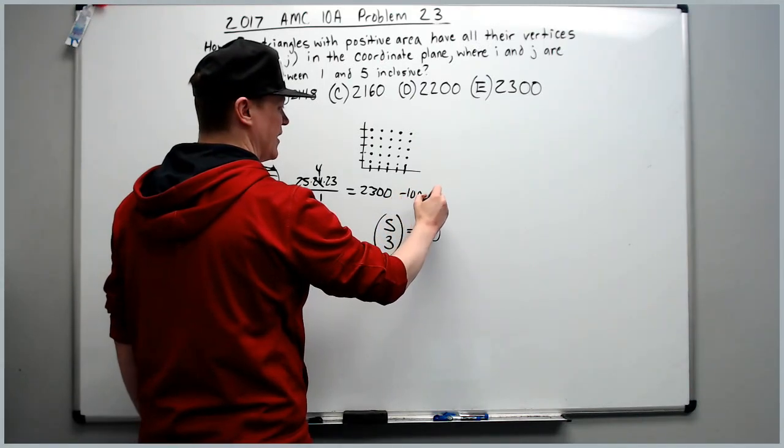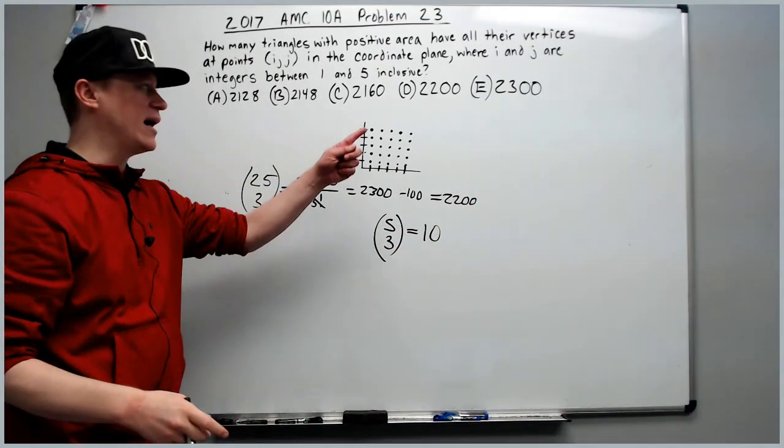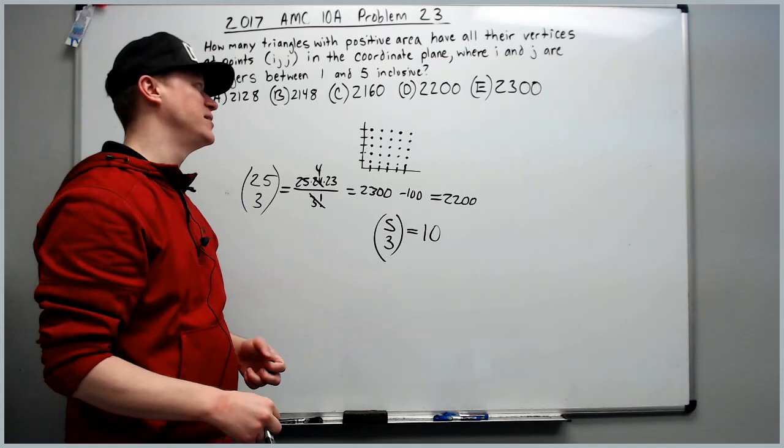We subtract 100 and now we're at 2200. And we think, oh, maybe we've got it. No, this is the second trap answer in the problem.